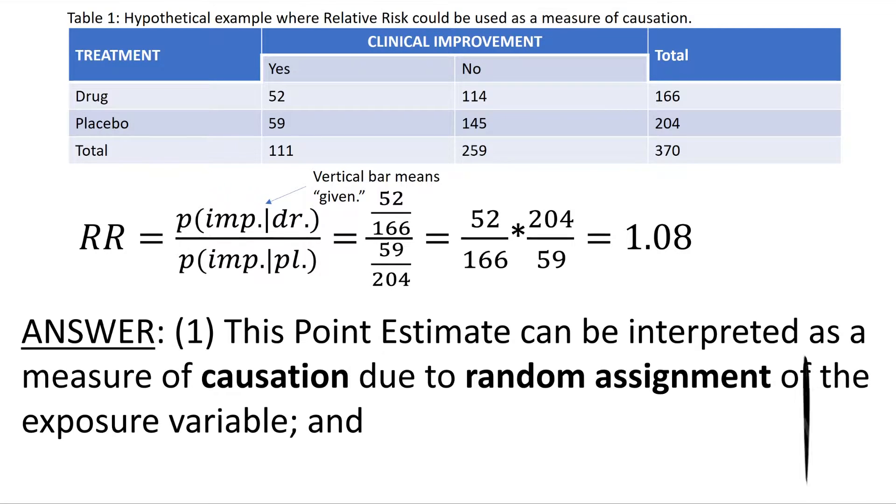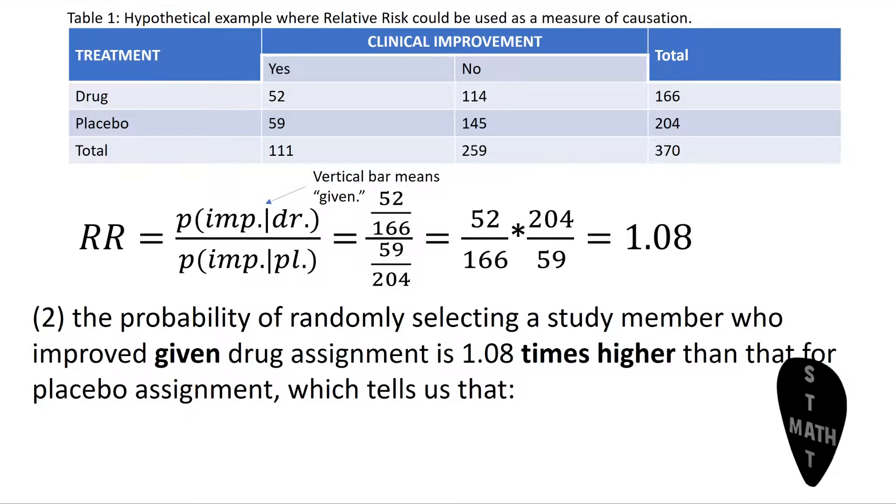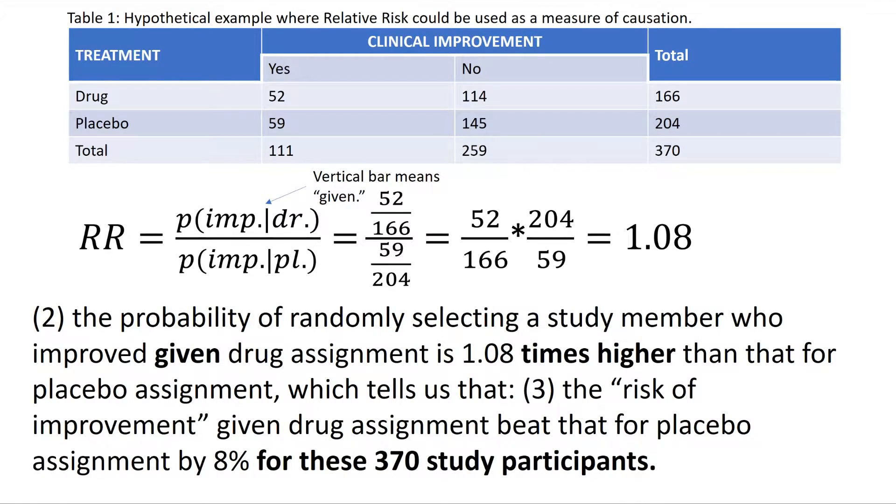And 2. The probability of randomly selecting a study member who improved given drug assignment is 1.08 times higher than that for placebo assignment, which tells us that 3. The risk of improvement given drug assignment beat that for placebo assignment by 8% for these 370 study participants.